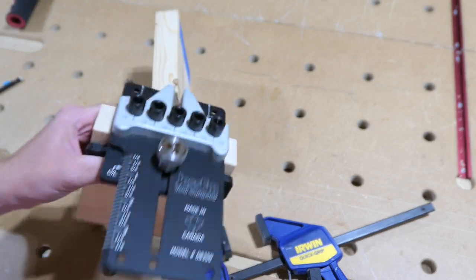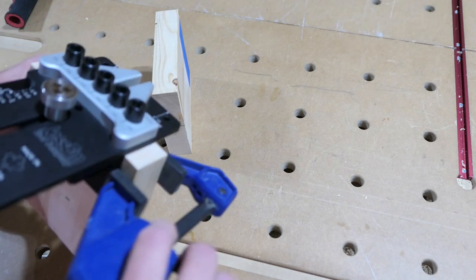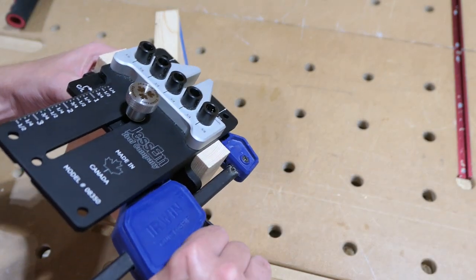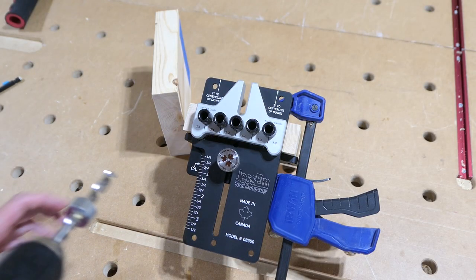Once the jig is lined up, you can use one of these clamps to keep it in place. Then you're ready to drill.